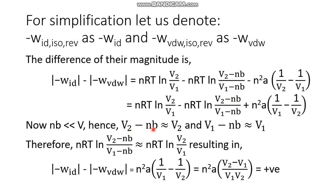Since the van der Waals constant b is very small, nb is much less than V, so V₂ − nb ≈ V₂ and V₁ − nb ≈ V₁. Therefore, nRT·ln((V₂ − nb)/(V₁ − nb)) ≈ nRT·ln(V₂/V₁), and those first two terms cancel each other. The remaining uncancelled term is n²a·(1/V₁ − 1/V₂), which equals n²a·(V₂ − V₁)/(V₁V₂).